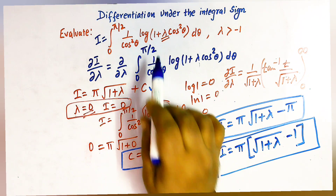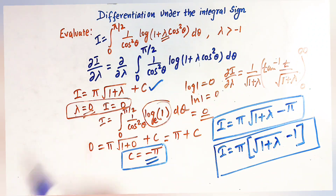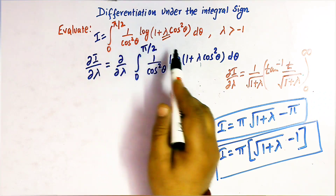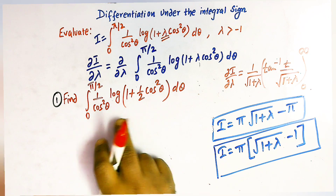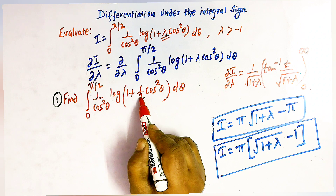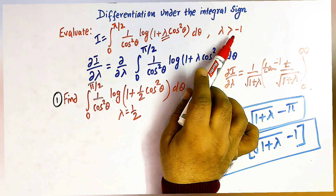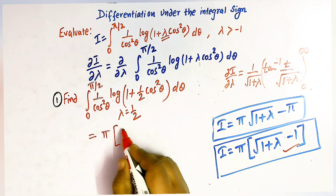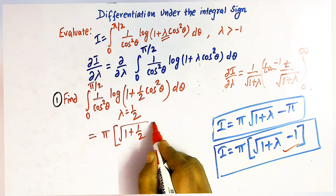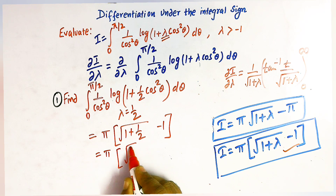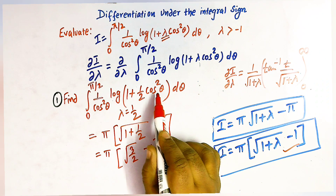This is how, by applying differentiation under the integral sign (Leibniz rule), we can evaluate these kinds of integrals. For example, if we need to evaluate the integral with (1/2) in place of λ — since 1/2 > −1 — we use the formula directly: i = π·(√(1 + 1/2) − 1) = π·(√(3/2) − 1).